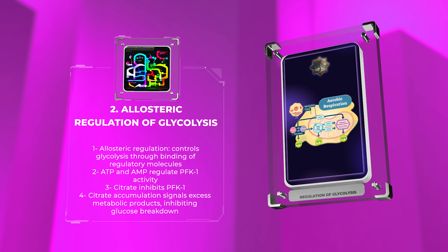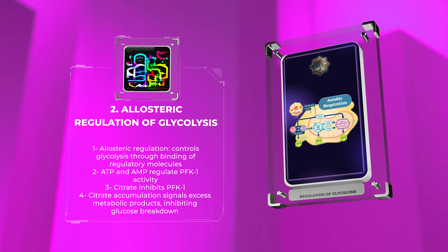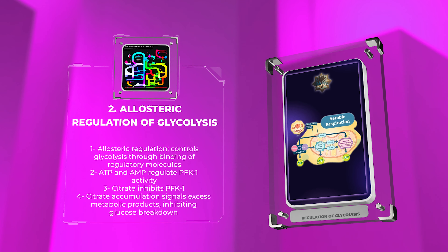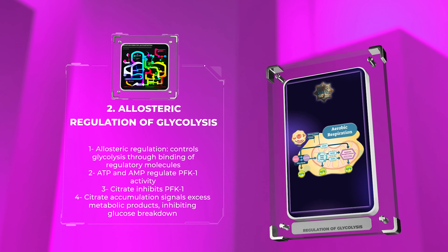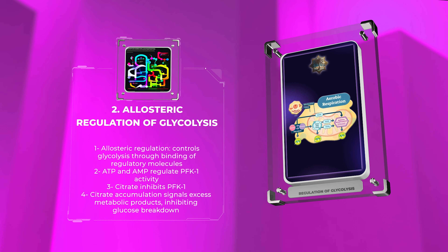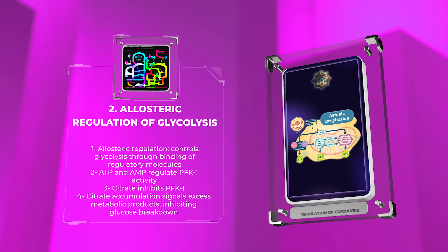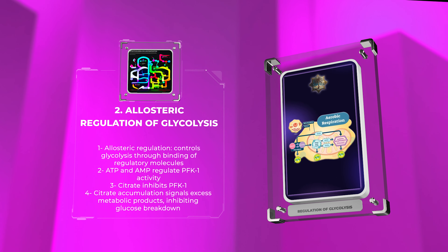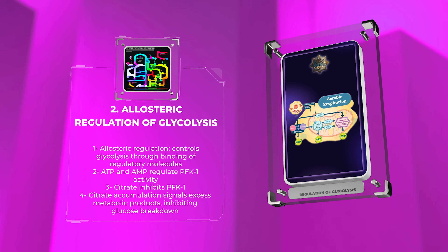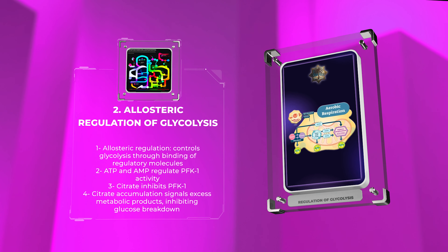One such example is the regulation of PFK1 by ATP and AMP. High levels of ATP indicate an abundant energy supply, leading to PFK1 inhibition, while AMP, a low-energy signal, activates PFK1, stimulating glycolysis. Moreover, another allosteric regulator, citrate, inhibits PFK1. Citrate accumulation occurs when the citric acid cycle is saturated with intermediates, signaling an excess of metabolic products and inhibiting further glucose breakdown.